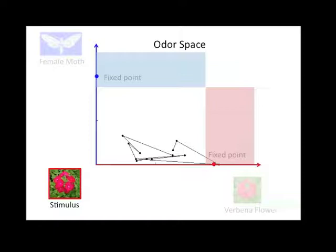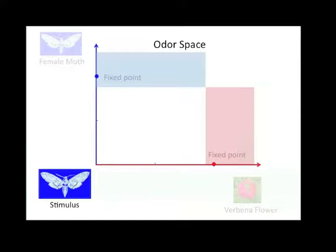As can be seen here, given a flower stimulus, it goes to the flower region, horizontal trajectory, and given a female pheromone results in vertical trajectory. Notice how it goes up as time progresses.